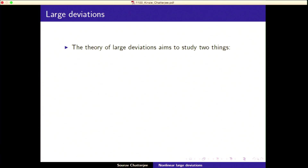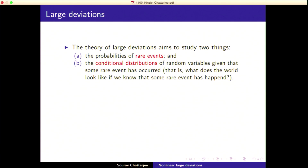Let me start by saying a few things about the area of large deviations. It's a technical part of probability theory, and there are two main goals. One is to study the probabilities of rare events — events that are very rare, with very tiny probabilities, but you want to understand how tiny. And you want to understand the conditional distributions given that some rare event has occurred, because the world doesn't look the same when something unlikely has happened.